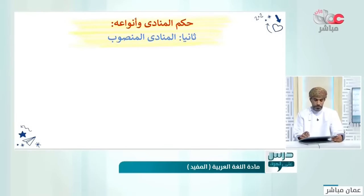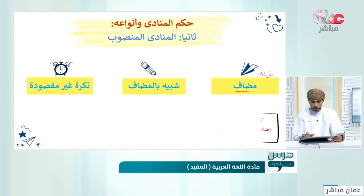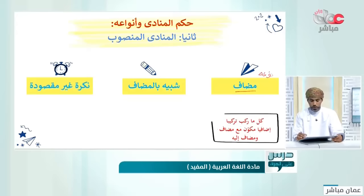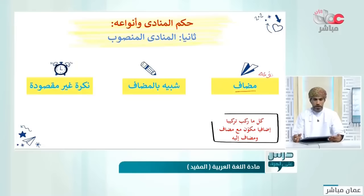ننتقل إلى المنادى المنصوب أو المعرب. أنواعه: الأول المضاف، الثاني الشبيه بالمضاف، والثالث النكرة غير المقصودة. المضاف هو كل ما ركب تركيباً إضافياً يتكون من المضاف والمضاف إليه.